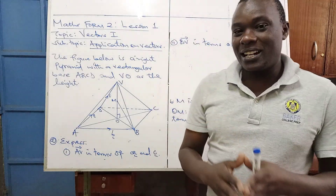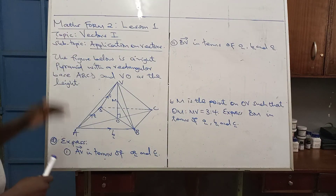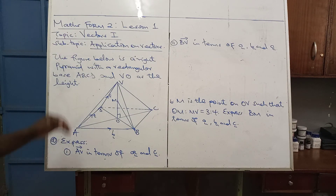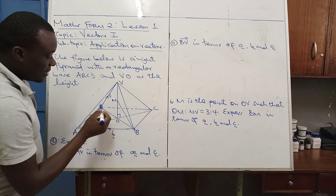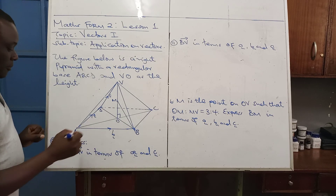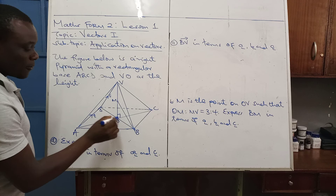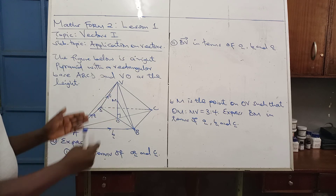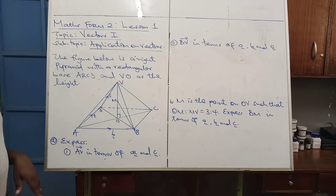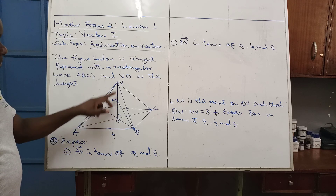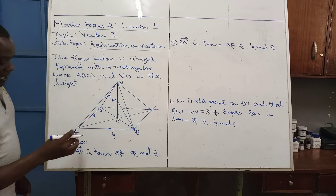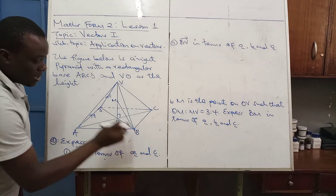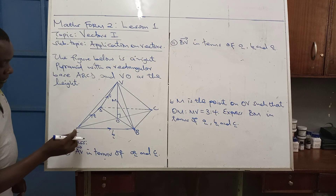The question says that the figure below is a right pyramid with a rectangular base ABCD and OV as the height. As you can see in our figure, ABCD is the base, and at the centre we have O. So from O to V gives you the height of the pyramid. We have been given vector AB = vector a, and vector AD = vector a, and vector DV = vector c.